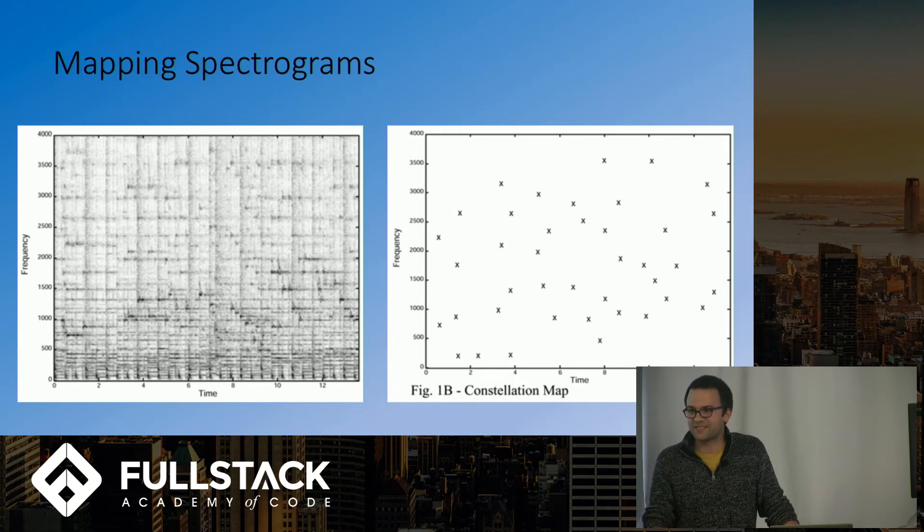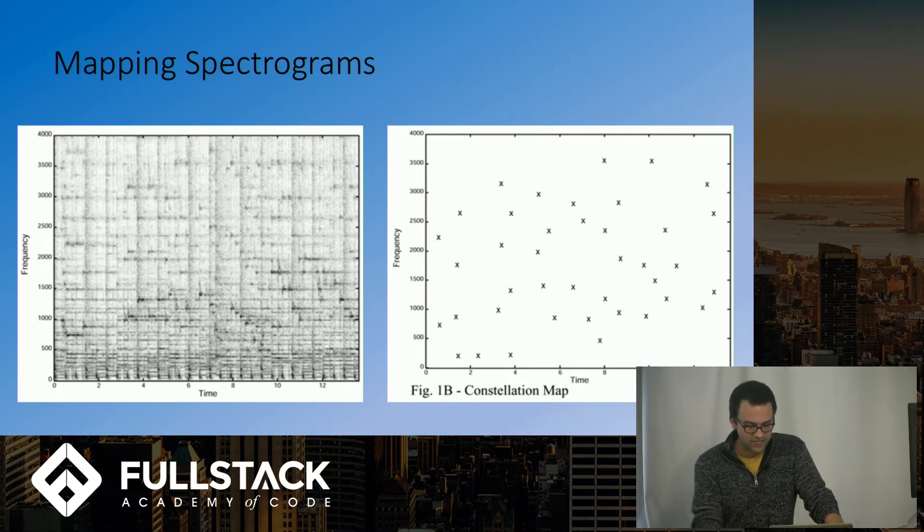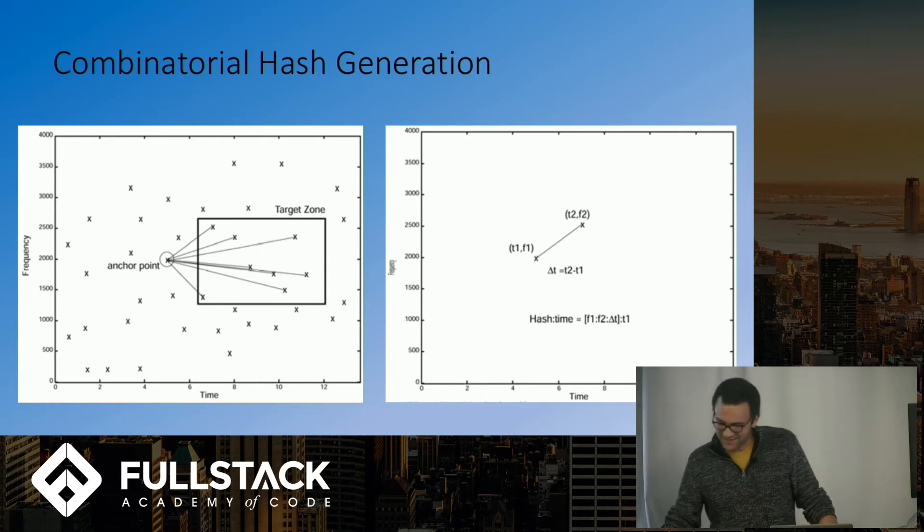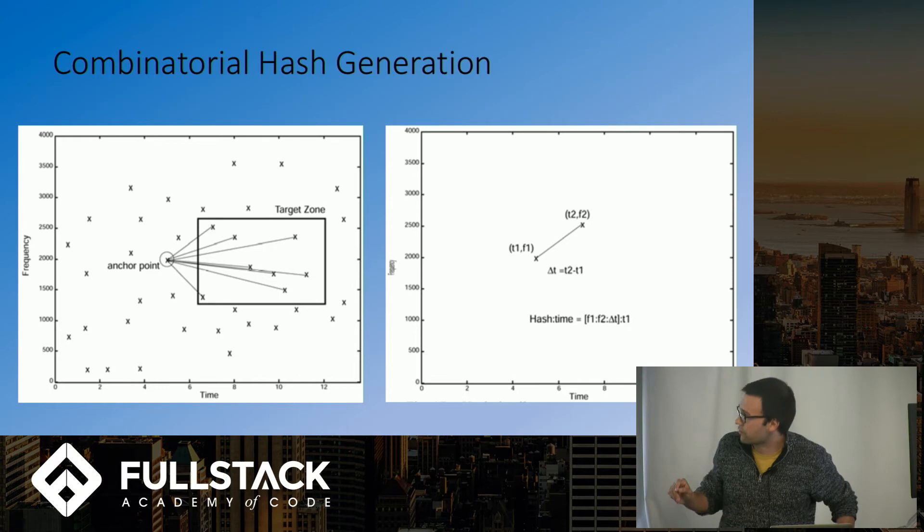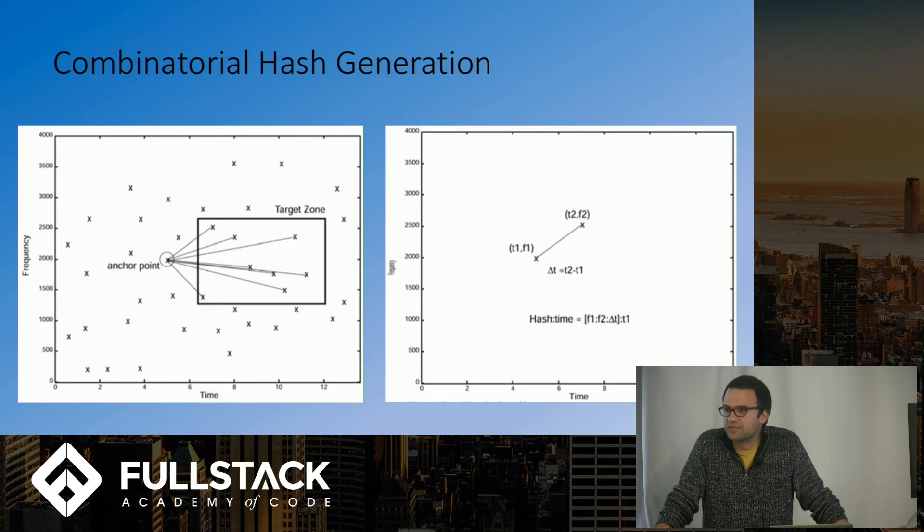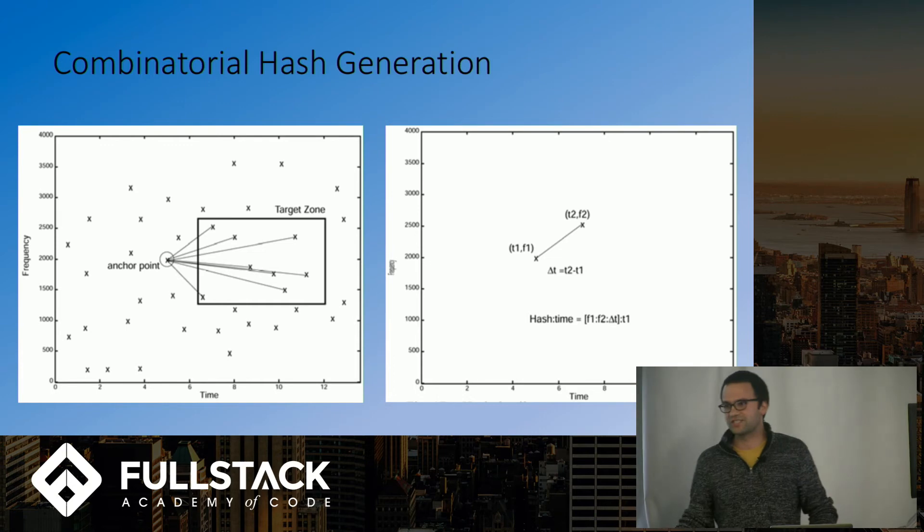So that's the first step in indexing the database, but we're not done yet. After producing a map of peaks, they create a combinatorial hash for each peak. This involves selecting a peak, depicted in the example on the left as an anchor point, and a corresponding target zone of neighboring peaks. The anchor point is paired with each peak in the target zone to produce a time frequency vector, which is a representation of the relationship between those two points in terms of change in frequency over change in time.